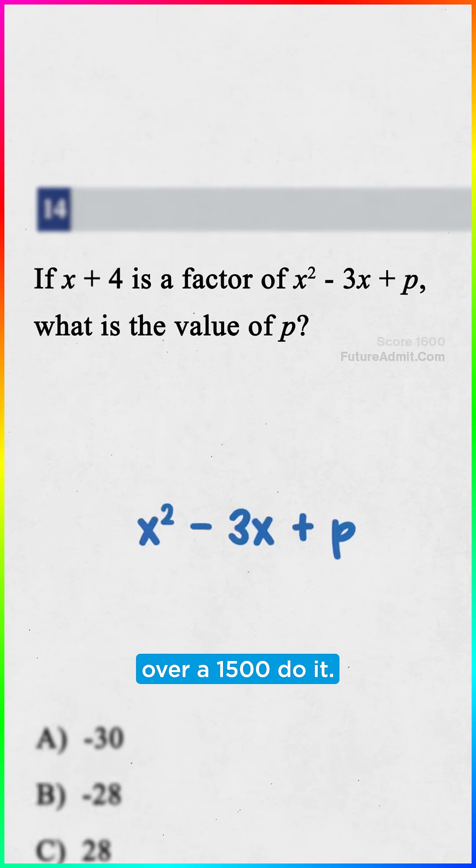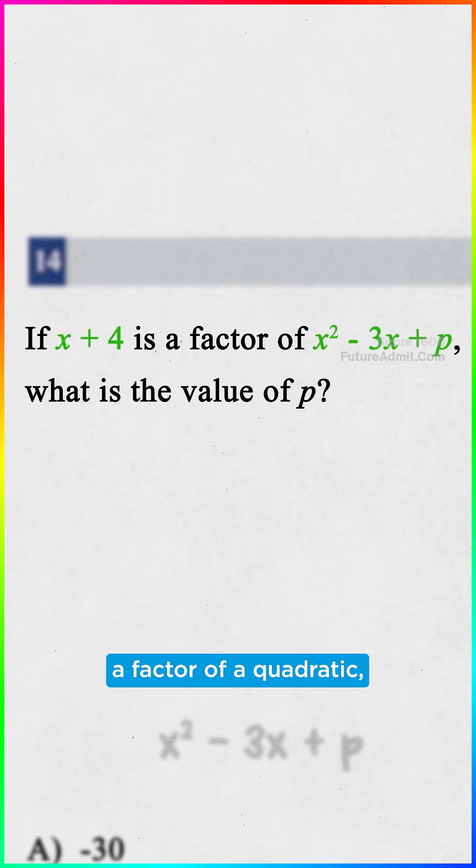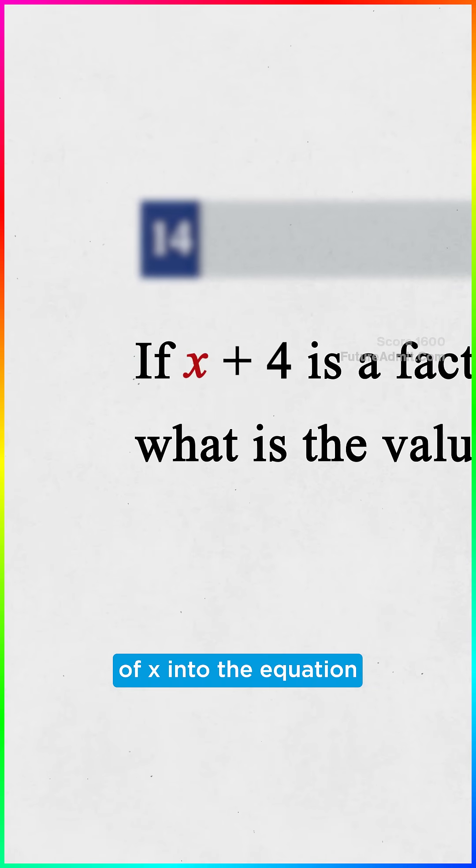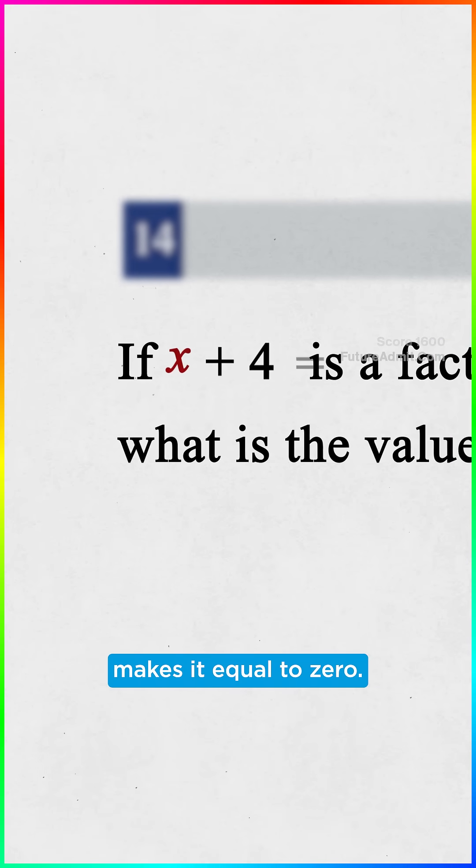Here's how the kids who score over a 1,500 do it. When something is a factor of a quadratic, it means plugging that value of x into the equation makes it equal to zero.